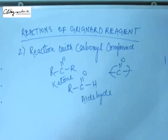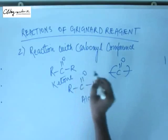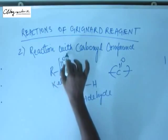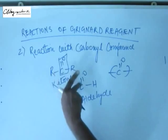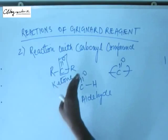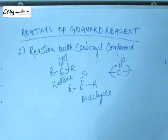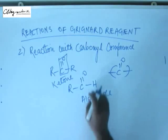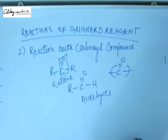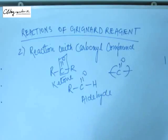We will study carbonyl compounds in great detail in the dedicated chapter. For now, the functional group with C=O and at least one hydrogen on a side is called an aldehyde, and when R groups are on both sides of C=O — whether open chain or closed chain, aliphatic or aromatic, saturated or unsaturated — that is called a ketone.